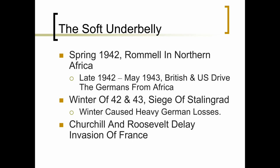The soft underbelly was the answer as far as England and the United States were concerned. In the spring of 1942, General Irwin Rommel in northern Africa was pretty much in control of the southern Mediterranean. From late 1942 to the spring of May 1943, Great Britain and the United States drove the Germans from Africa. In the winter of 1942 and 1943, there was the siege of Stalingrad — Germany invading into Russia, causing heavy losses on both sides. Churchill and Roosevelt continued to delay the planned invasion of France, which put more pressure on Russia and Stalin's alliance with the other two leaders.